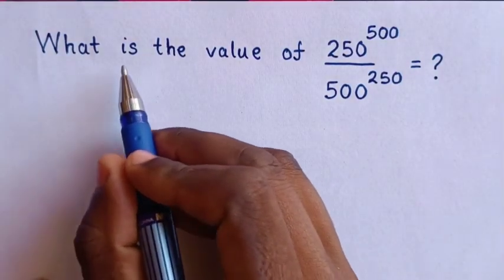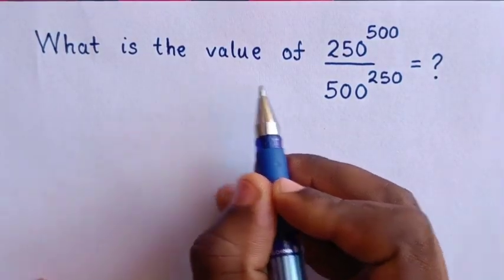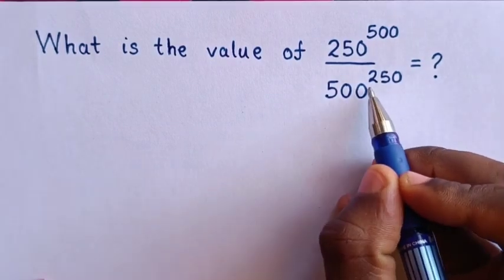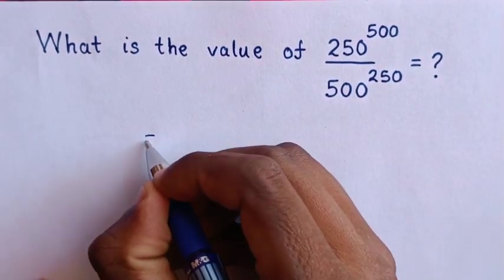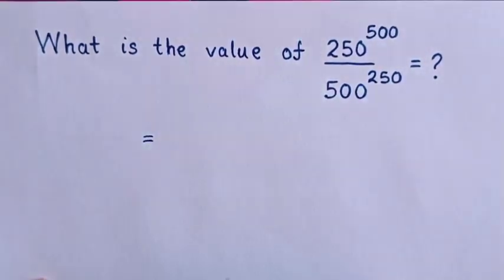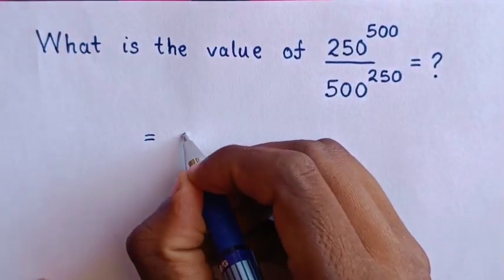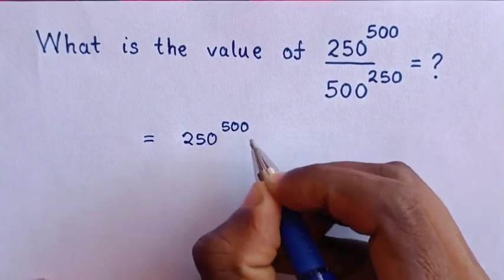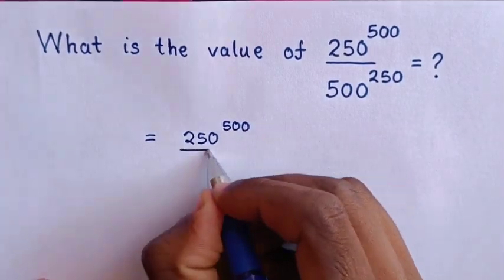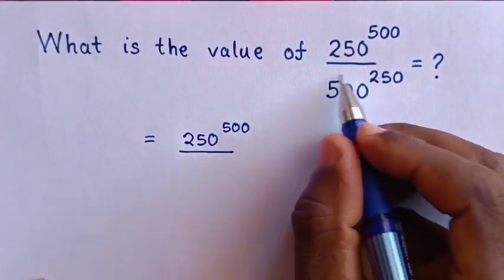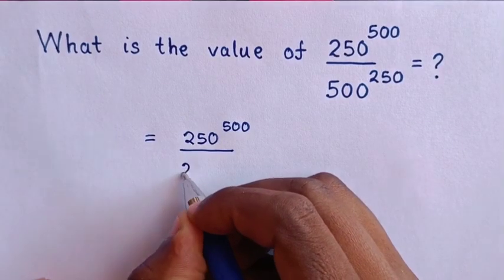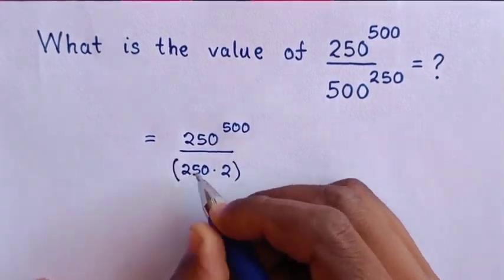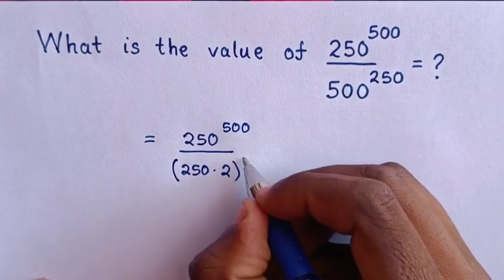Hello, what is the value of 250 power of 500 over 500 power of 250? So this is equal to, here in the numerator is 250 power of 500 over, here in the denominator 500 is same as 250 times 2, then bracket power of 250.